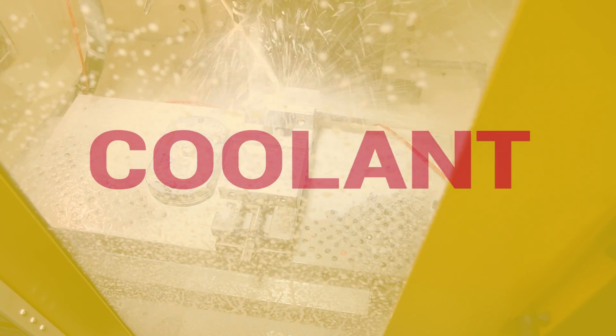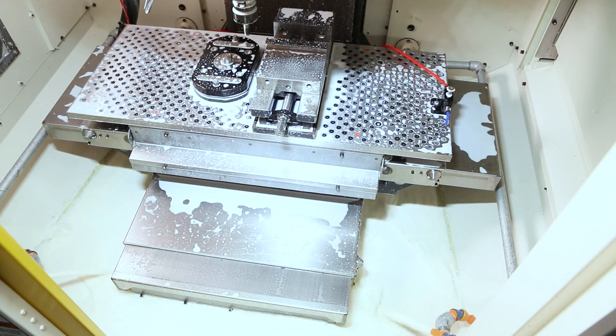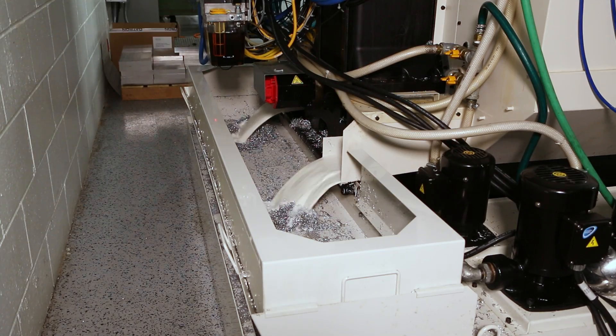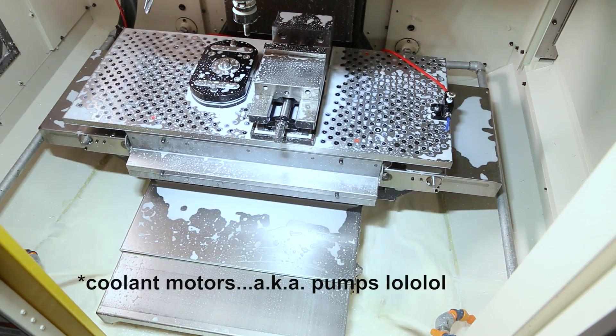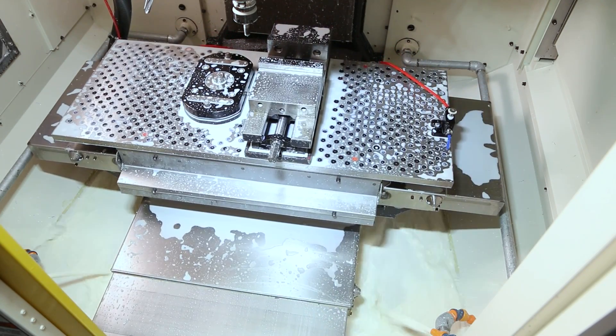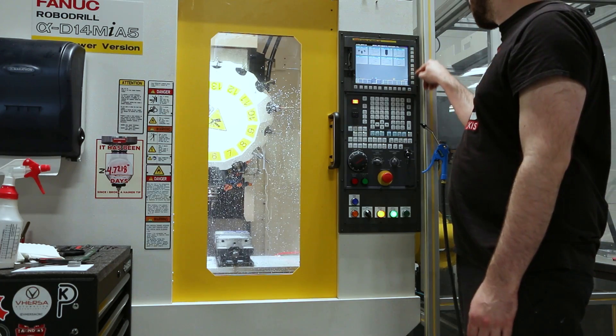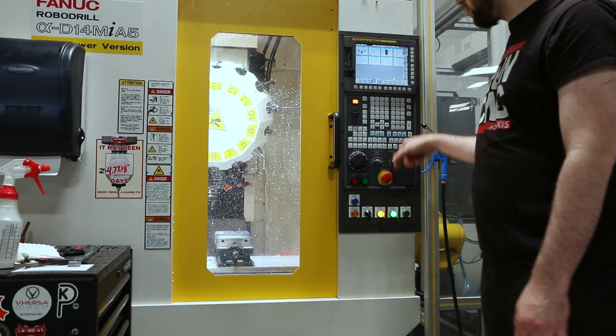Another great feature of this machine is full chip wash down for the base and walls of the enclosure. It requires a huge coolant tank to do this, multiple coolant motors, but this thing stays spotless, especially when compared to some of our machines that have chip augers or chip conveyors.